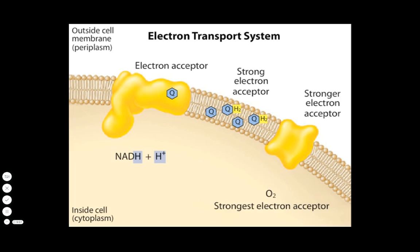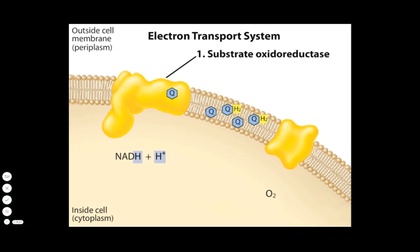A typical bacterial electron transport system used in respiration includes at least three functional components, beginning with a complex generally called a substrate oxidoreductase. This enzyme has a number of more specific names, including NDH1 for the complex in bacteria.